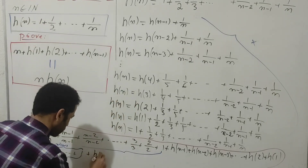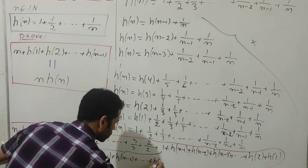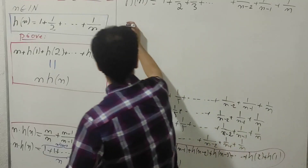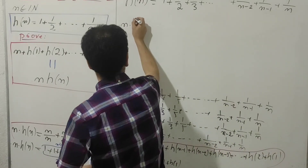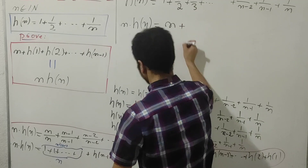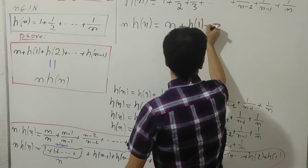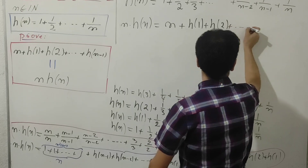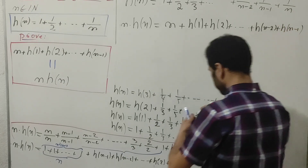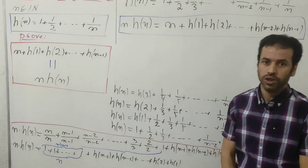So we have n multiplied by H(n) equals n plus H(1) plus H(2) and all the way down to H(n-2) plus H(n-1). I have proven this equality. If you're interested in watching more, don't forget to support us with your like and subscribe. Thank you for watching — I will see you in the next video, bye!